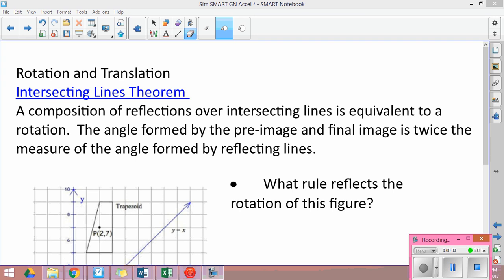Our last example is looking at the unique situation of what happens when we reflect multiple times over intersecting lines.